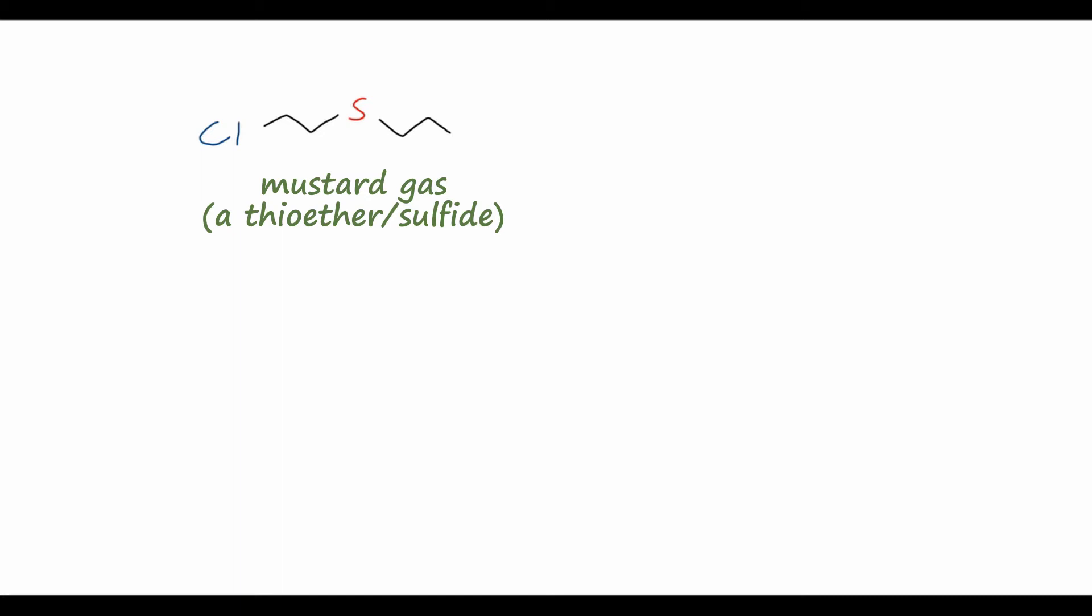So we know that this sulfur is nucleophilic, and we actually have a pretty good leaving group on this molecule. So what we can do is have an intramolecular SN2 reaction, where the sulfur swings over to attack this carbon, kicking off the chlorine, and giving us this sulfonium cation, where sulfur now has a plus charge. And now we have two very electrophilic carbons in this three-membered ring, which can react with nucleophiles in the body, which is believed to be a large source of the danger of this molecule.